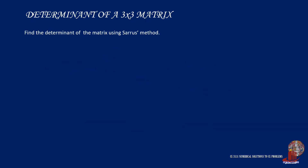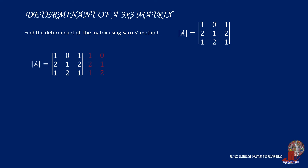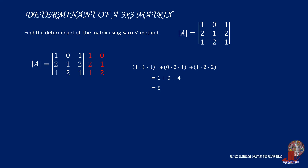Find the determinant of the matrix using the Cyrus method. The positives are taken as 1 times 1 times 1, 0 times 2 times 1, and 1 times 2 times 2. The negative diagonals give the expression 1 times 1, 2 times 2 times 1, and 1 times 2 times 0, also resulting in negative 5. The determinant of matrix A is again computed as 5 minus 5, or 0.